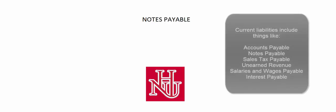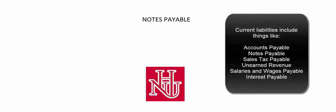Chapter 11 is about current liabilities — stuff that's due within the next year or the next operating cycle. If you're Boeing, you have a long time to make an airplane and your operating cycle is longer than a year, but let's just say current liabilities are things due within a year. Things like notes payable, sales tax payable, unearned revenue, and liabilities created in the payroll process.